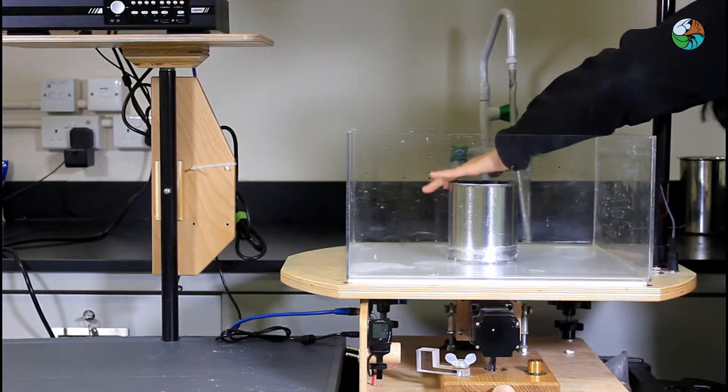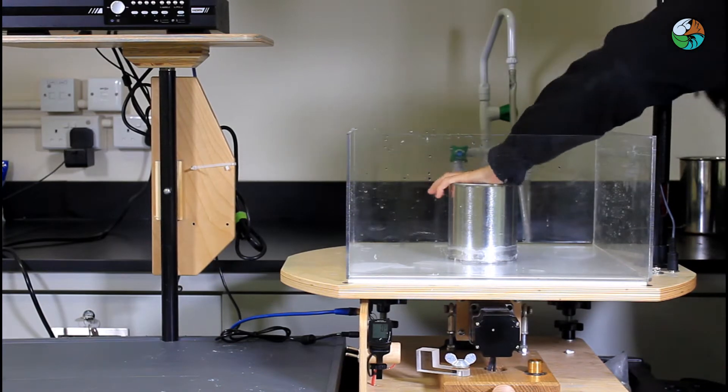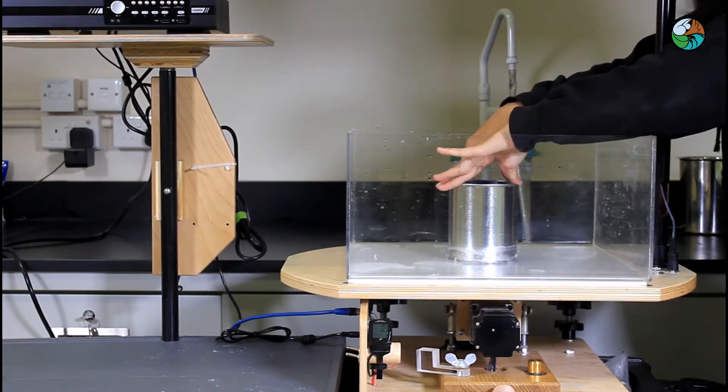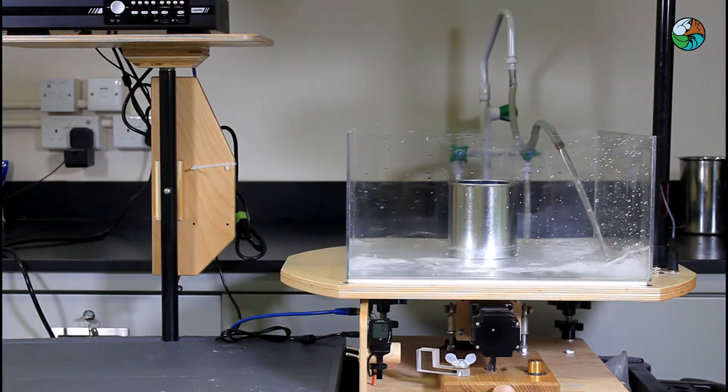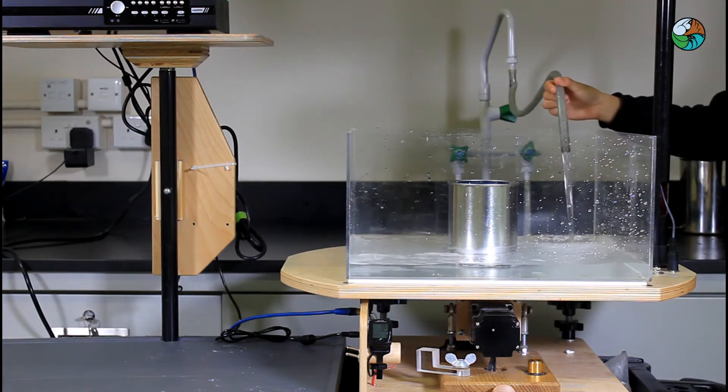Slightly apply force on the can to make sure it is in full contact with the tank. Add fresh water to the tank outside the can until water reaches a level of about 10 cm.